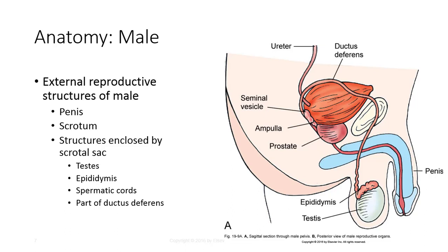The testes are ovoid bodies averaging 1.5 inches or 3.8 centimeters in length and 1 inch or 2.5 centimeters in width and depth. They are divided into 200 to 300 partial compartments that constitute the glandular substance. Each compartment houses one or more convoluted, germ cell-producing tubules which unite into 15 to 20 ductules that exit the testes and enter the epididymis.